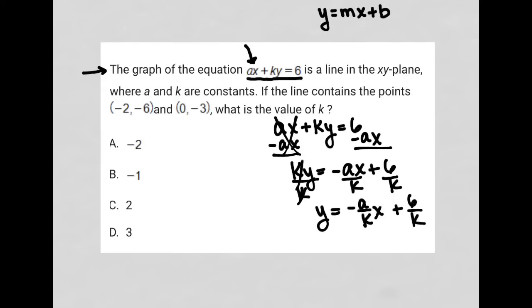Let's continue reading the question. It says where A and K are constants. That's good to know, so our only variables are still just Y and X as usual. If the line contains the points negative 2, negative 6, and 0, negative 3.